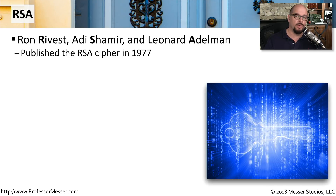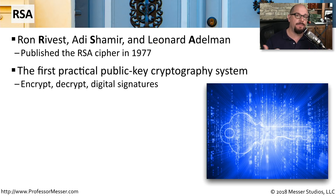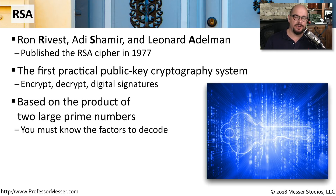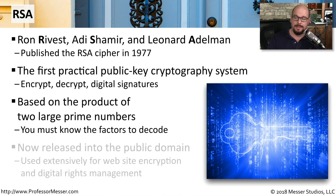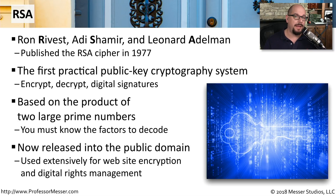One of the first forms of asymmetric encryption was the RSA algorithm. RSA stands for Ron Rivest, Adi Shamir, and Leonard Adleman. This was published in 1977, and it was really the very first practical use of public key cryptography. We can use RSA to encrypt information, decrypt information, and we can use it for digital signatures. One of the foundations of RSA is that it uses very large prime numbers to accomplish this public-private key encryption method. It's a method of encryption that's now part of the public domain, so you'll see RSA used for website encryption, digital rights management, and many other uses.